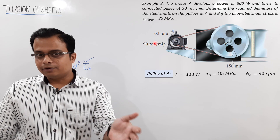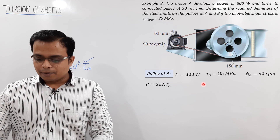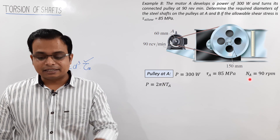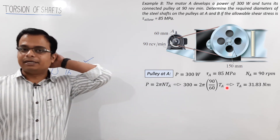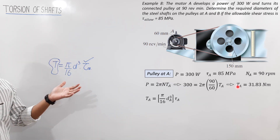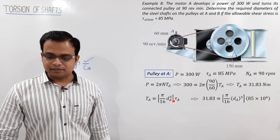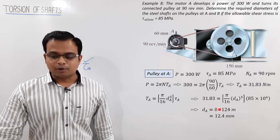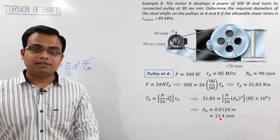For pulley A: P = 300 W, N = 90/60 RPS. Torque T_A = 31.83 N·m. Using T = (π/16)·D³·τ_max with τ_max = 85 MPa, D_A = 0.0124 m = 12.4 mm.